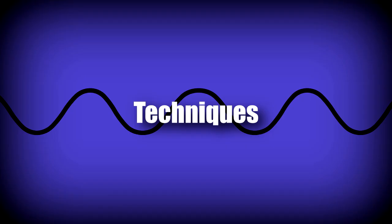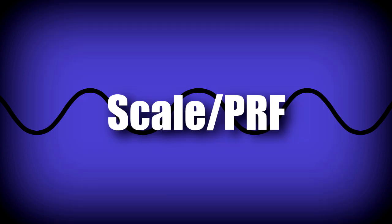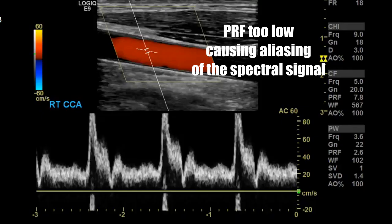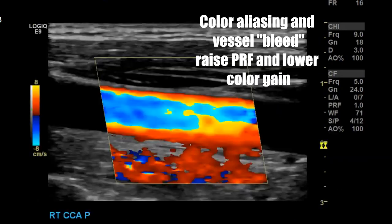Here we'll go over some techniques essential for optimization of imaging. One is beam steering, which needs to be done in the direction that allows for the smallest angles of incidence to blood flow. Another consideration is scale, or pulse repetition frequency (PRF), for both color and spectral Doppler. PRF can be lowered to optimize color filling in slower-flow vessels, and raised in higher velocities to avoid or reduce aliasing. Along with wall filter and baseline adjustments, you will use these to optimize your imaging.